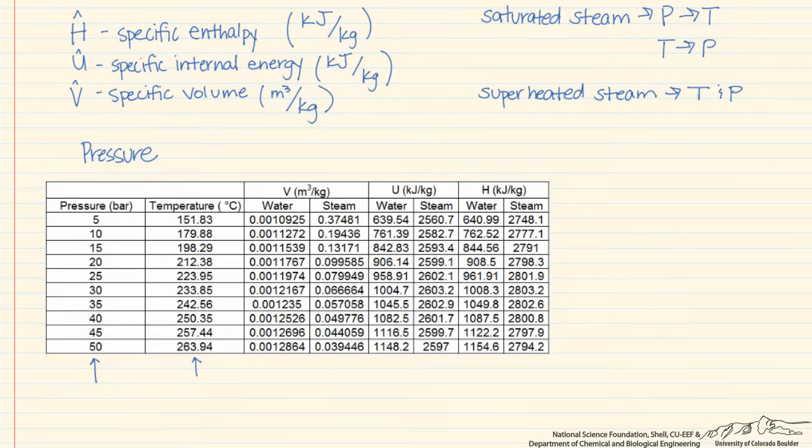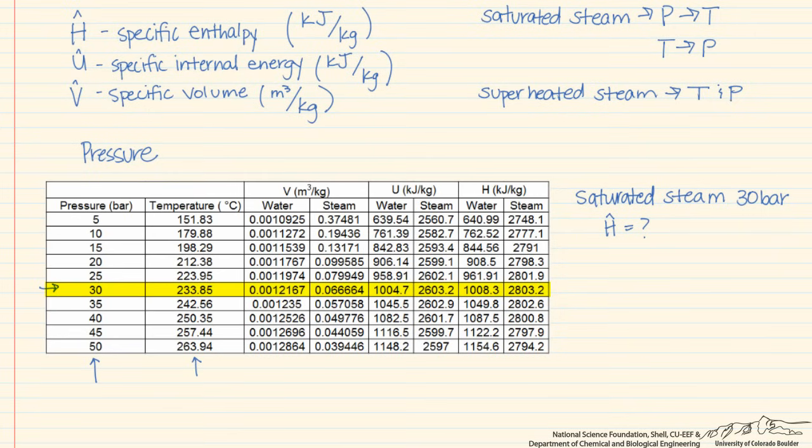So let's see how we use this. We're told that we have saturated steam at 30 bar, and we are looking for the specific enthalpy. So we go to our table, and we find 30 bar. So at 30 bar, you see that the temperature is 233.85 degrees Celsius.